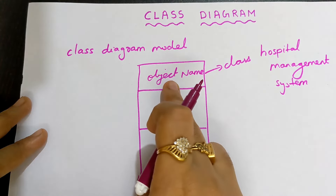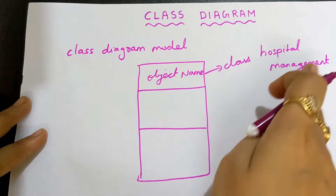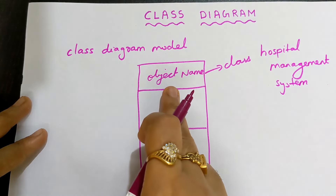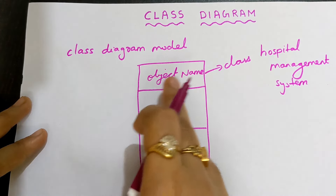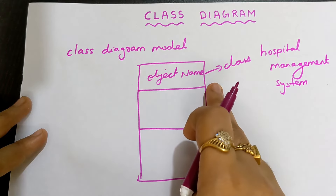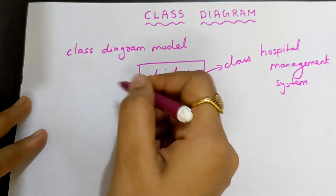The object can be a doctor, because in a hospital, a doctor should be there. The doctor plays an important role, so doctor is an object. The object name will be doctor, for example.